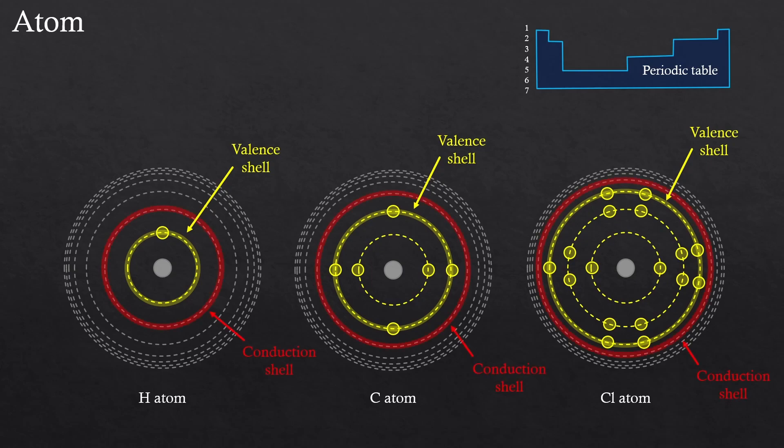Now, there is something called conduction shell. So this is simply the next shell beyond valence shell. If an electron is in a conduction shell, or even outside of that shell, it becomes a free electron, meaning it doesn't need to stay with the atom. It can move to another atom's conduction shell whenever it wants.